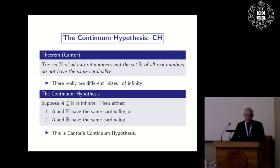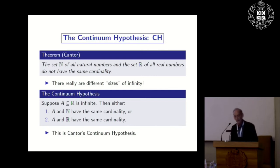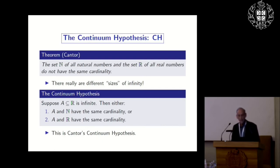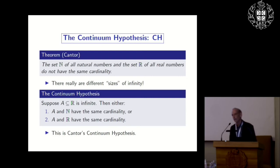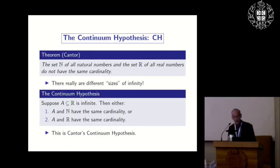A natural question arises: if you have an infinite set of real numbers, must it either be of cardinality the natural numbers or have cardinality that of all the real numbers? In other words, is there an infinite size between the infinity of the natural numbers and the infinity of the real numbers? The assertion that there is not — that's Cantor's continuum hypothesis.